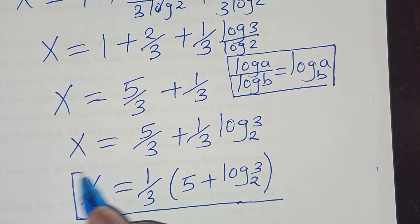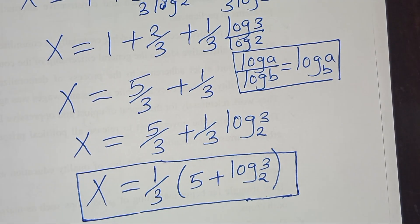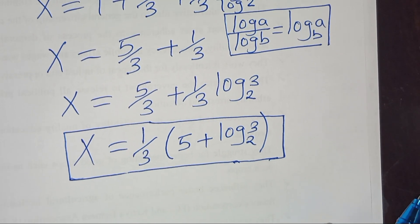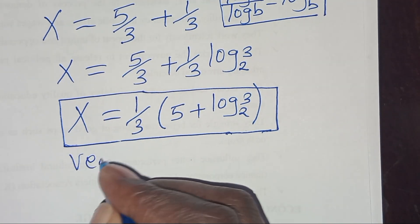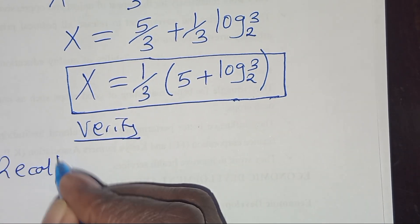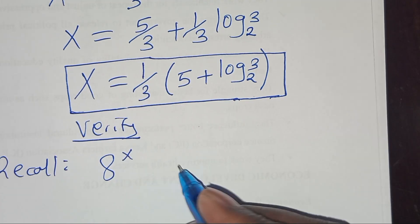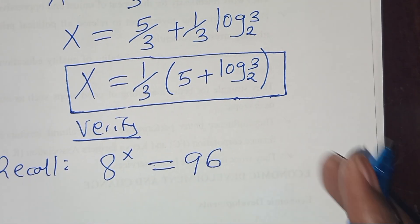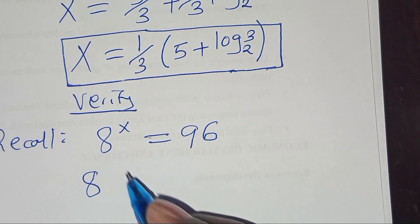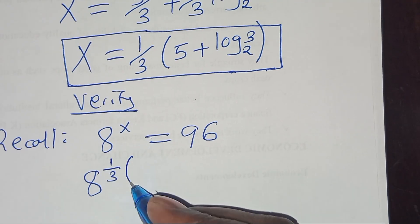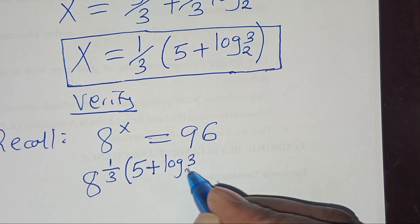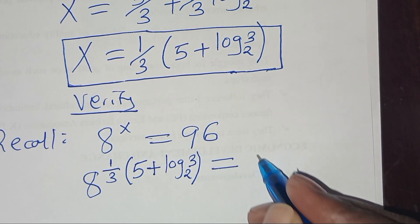Let's verify that this value of x satisfies the equation. Recall that 8^x should give us 96. Substituting x, we have 8 to the power (1/3)(5 + log₂(3)), and this should give us 96.